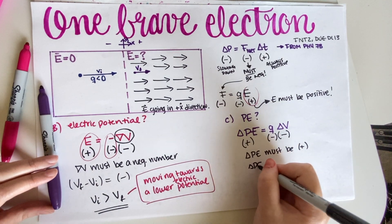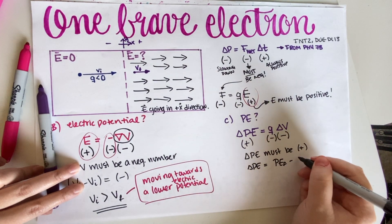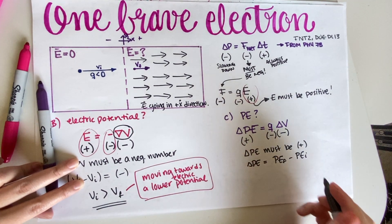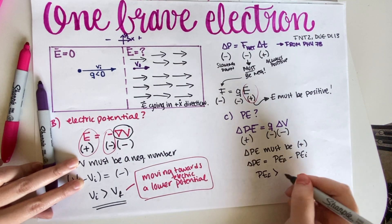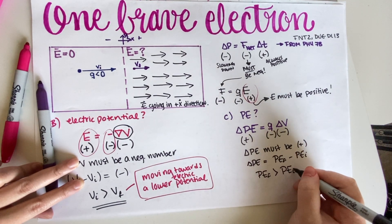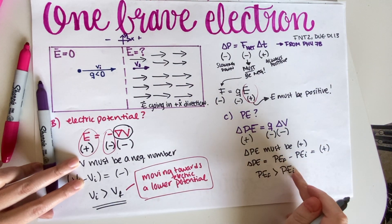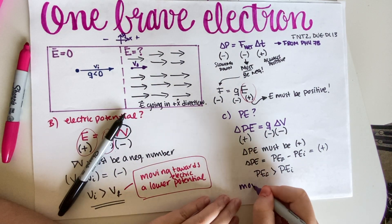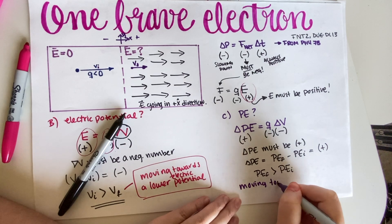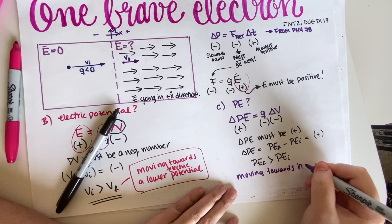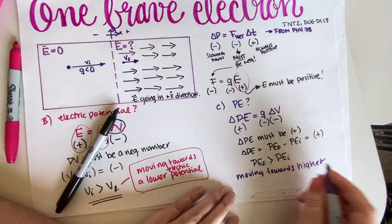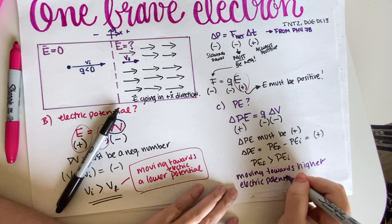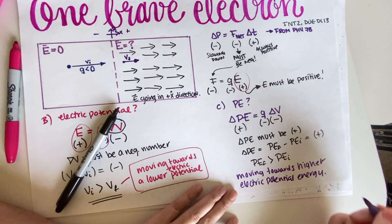So we would have negative times negative. So that would mean that delta PE must be positive. And delta PE is just final minus initial. And because it's positive, that means that the PE final is greater than the initial. So that means that we are moving towards a higher electric potential energy, final answer.